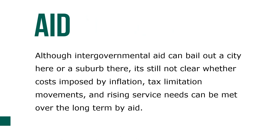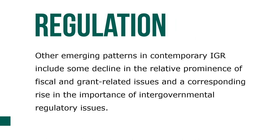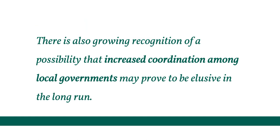Although intergovernmental aid can bail out a city here or a suburb there, it is still not clear whether the costs imposed by inflation, tax limitation movements, and rising service needs can be met over the long term by aid. These controls raise questions about public accountability and about the ability of chief executives to coordinate spending activity. Other emerging patterns in contemporary IGR include some decline in the relative predominance of fiscal and grant-related issues and a corresponding rise in the importance of intergovernmental regulatory issues. There is also growing recognition that increased coordination among local governments may prove to be elusive in the long run in terms of providing solutions to the challenges faced.